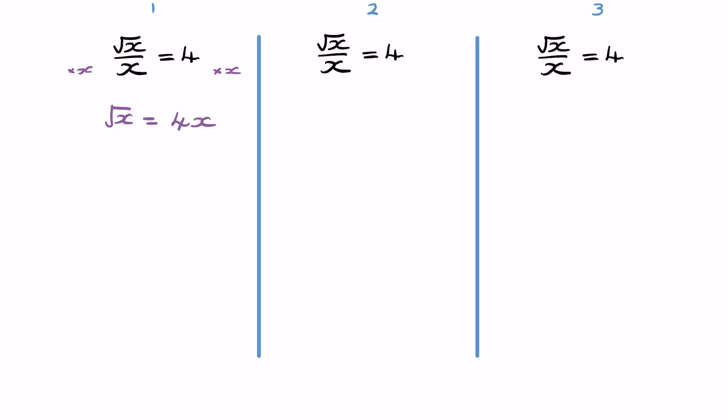Now let's get rid of that square root sign. So we square both sides, and that leaves us with x equals 4x all squared. And we evaluate 4x all squared, which 4 squared is 16, and then the x squared can stay there.